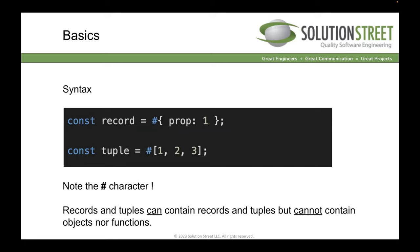Now we have records and tuples that will solve most of those problems. The proposal declares that to create a record, you use a hash character in front of an object literal, and a hash character in front of an array literal for a tuple. Records and tuples can contain other records and tuples inside them, but you can't put a plain object or a function inside a record or tuple — they need to remain consistent for these types to work properly.